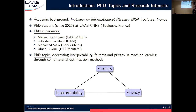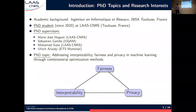My PhD topic is addressing interpretability, fairness, and privacy in machine learning through combinatorial optimization methods. One way to represent it graphically is to use this graph, where you can see these three very active fields of trustworthy machine learning — interpretability, fairness, and privacy — and the objective of my PhD is to study their interactions, which can be either synergies or tensions, using tools from combinatorial optimization and operations research. In the next few slides, I will overview my different research topics and position them on this graph.